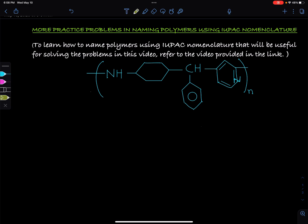Let's look at the first question. In this question we have a constitutional repeating unit which has an imino group followed by a cyclohexyl group, followed by a phenylmethylene group, followed by a pyridine ring.